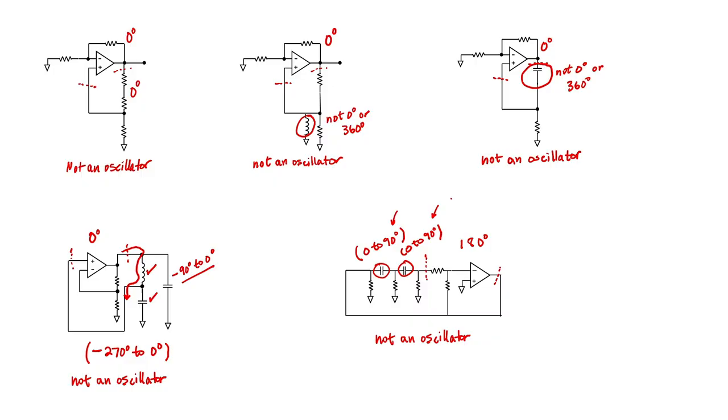With the phase shift oscillator, with three capacitors, we're able to achieve somewhere between zero and 270 degrees for the feedback network and 180 degrees for the amplifier. So for one very special frequency, the net phase shift around the entire loop can be zero degrees.